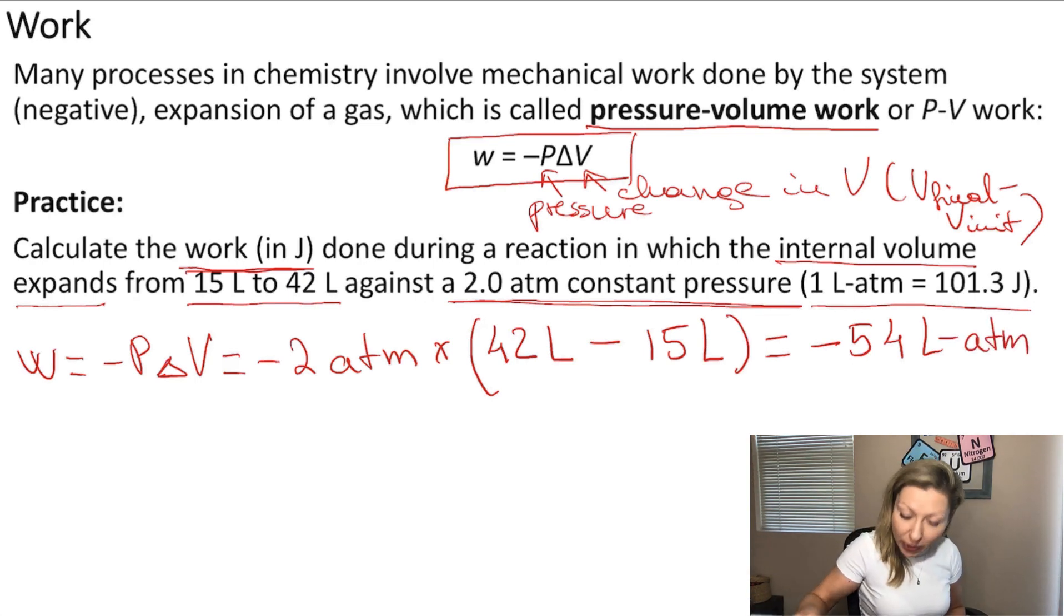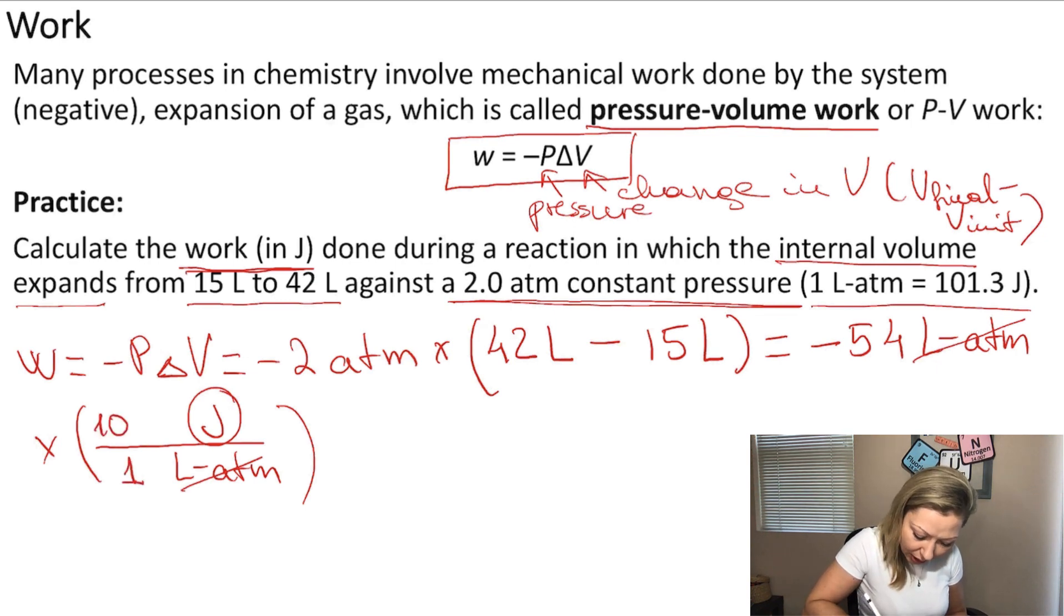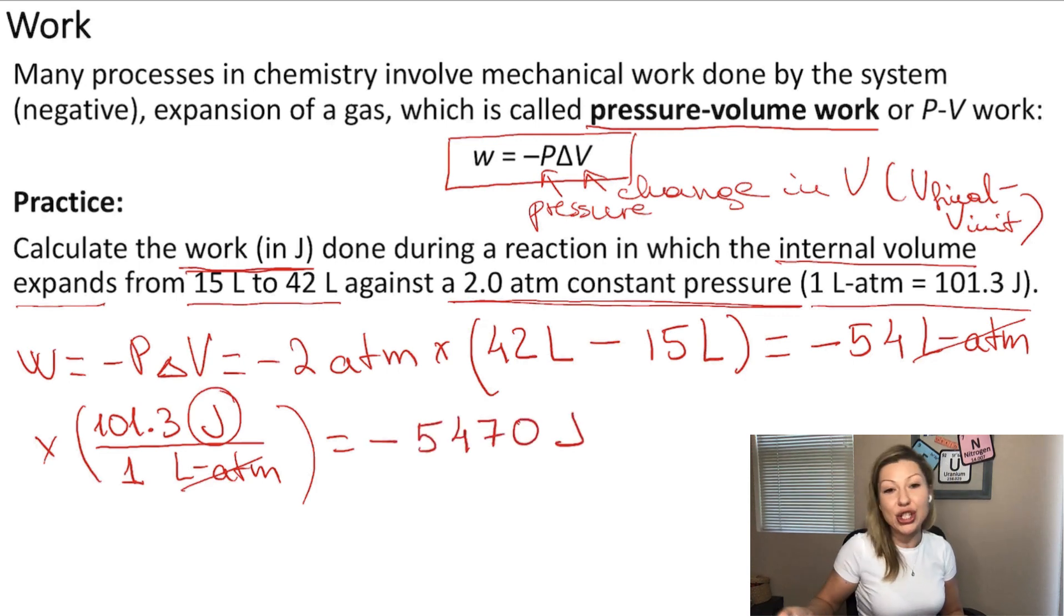And from here, we can convert into joules using our conversion factor. So multiply by liter atm goes on the bottom, joules go on top because we want to cancel out the liter atms and end up with a joule. And we know that one liter atm is 101.3 joules. So if you do this calculation, you are going to arrive to minus 5470 joules.